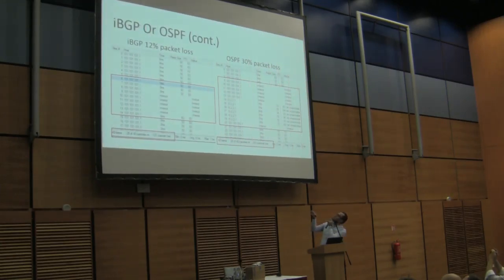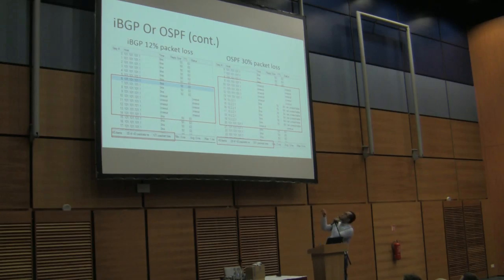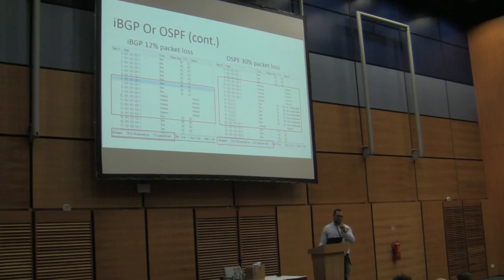Here is the differentiation between the two protocols: with the same 40-packet test, the result was 30% packet loss using OSPF and only 12% packet loss with iBGP. As you can see, in the OSPF case there is still the step of root calculation and selecting the best preferred route before installing it, then a switch between two different routes.